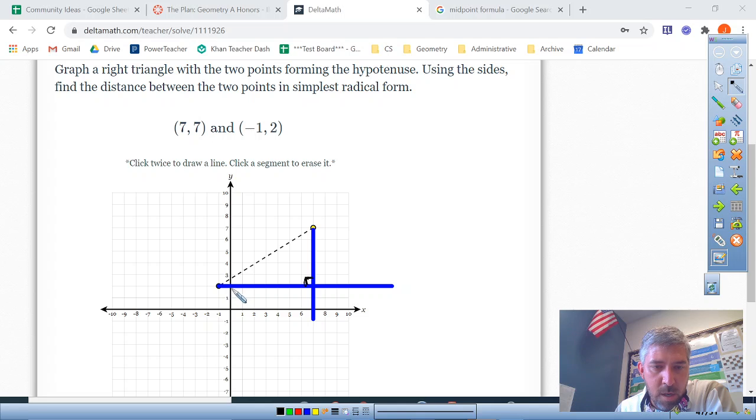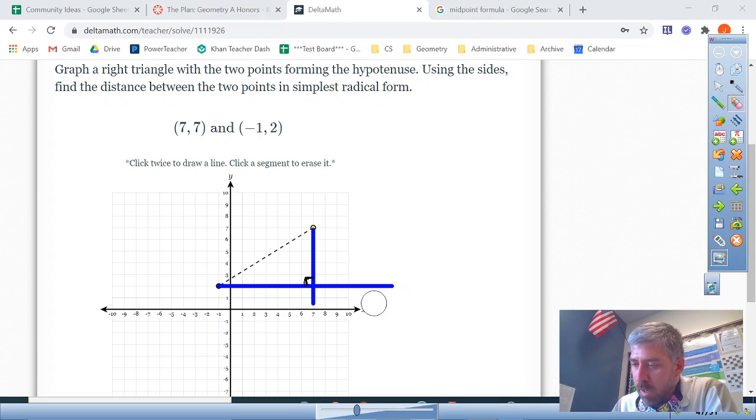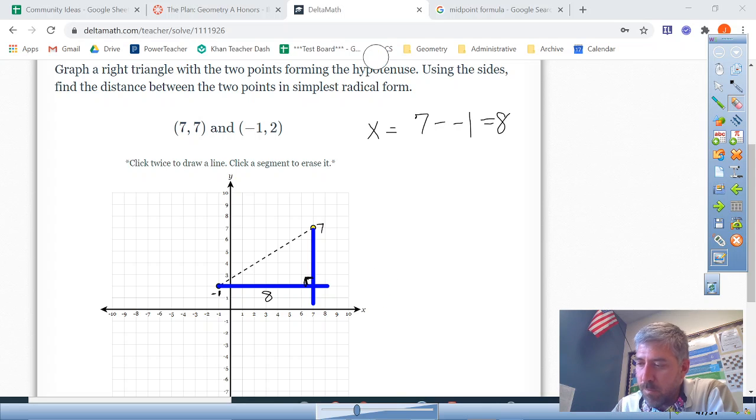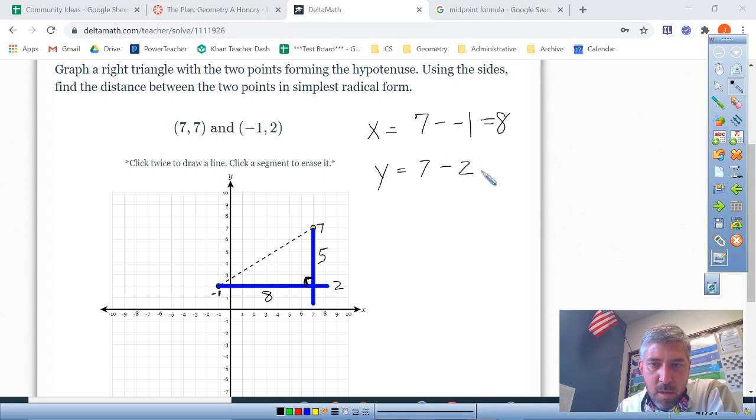Now we're literally just going to count. So from negative one to positive seven horizontally, that's eight units. So the x component is seven minus negative one, which is eight. The y component goes from seven through two. This is at two. So there's five units between seven and two. So the y component is five. y is seven minus two, which is five.